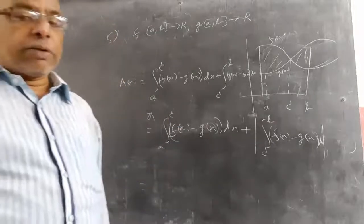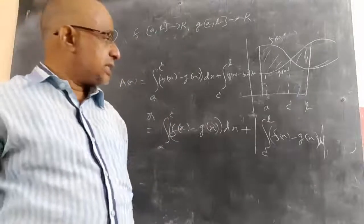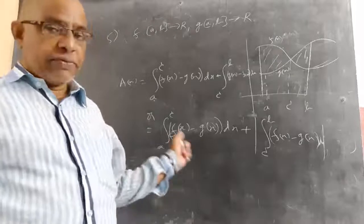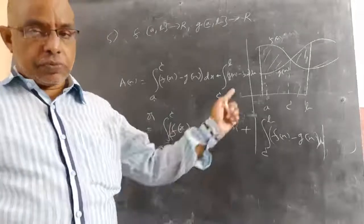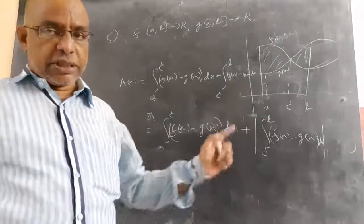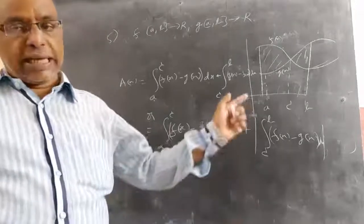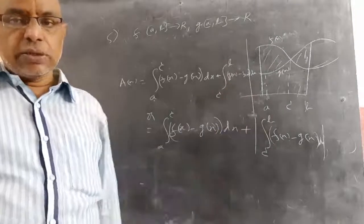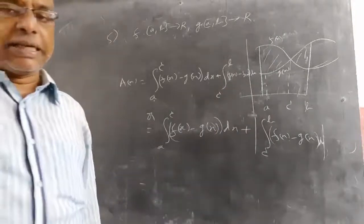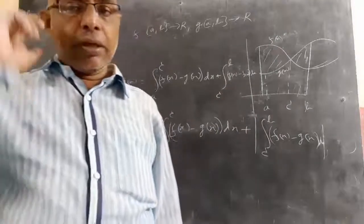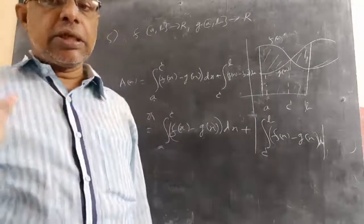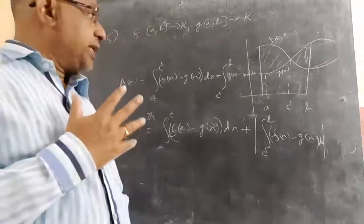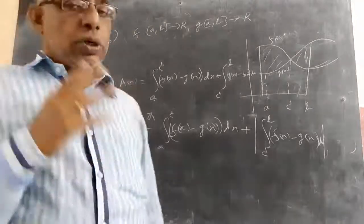If there are more than one intersection point, you can take: a to c1, c1 to c2, c2 to c3, and so on, cn to b. Like that you can split as many times as needed. This is how to find the area between two curves.